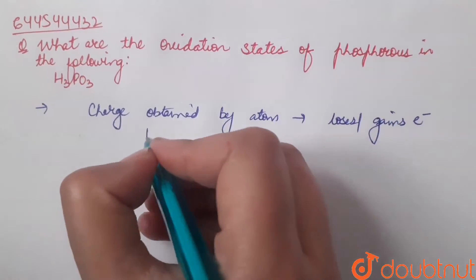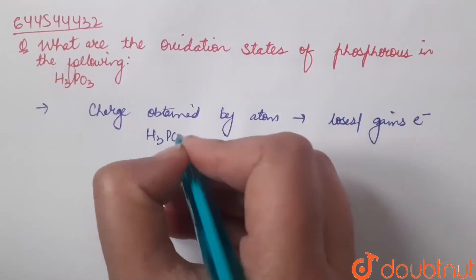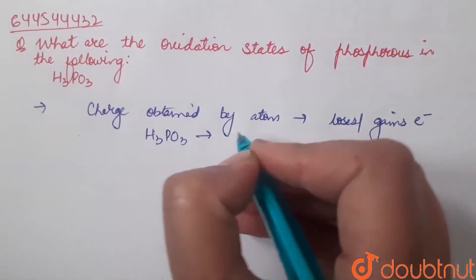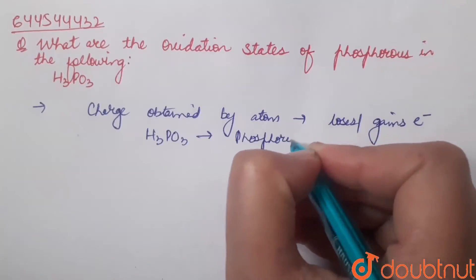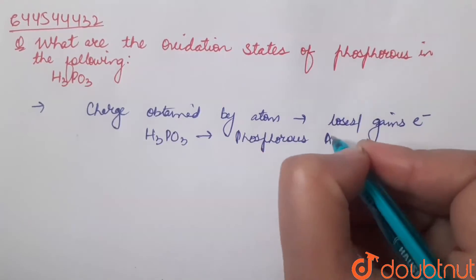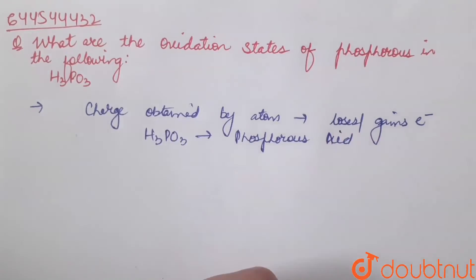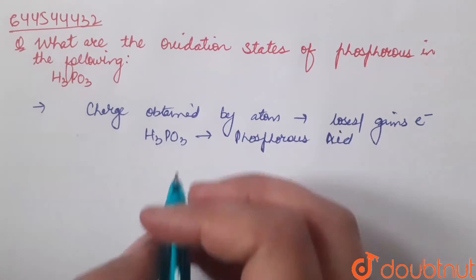Here we have H3PO3, that is phosphorus acid. Now, let the oxidation state of phosphorus in this be X.